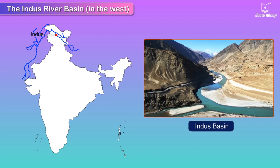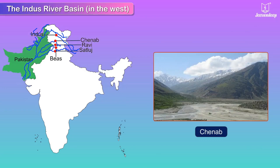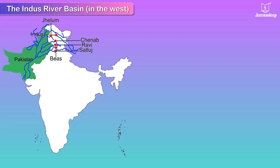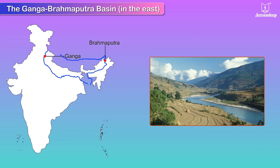The Indus River Basin in the west: a major part of the Indus River Basin lies in Pakistan. It has five tributaries — Satlaj, Ravi, Beas, Chenab, and Jhelum — two of which, Satlaj and Beas, flow through the northern plains before joining the Indus in Pakistan.